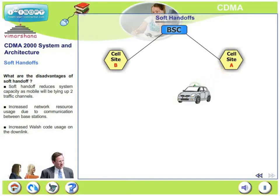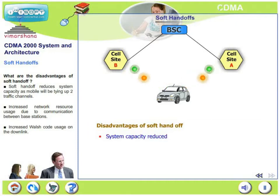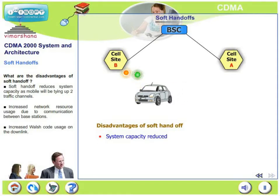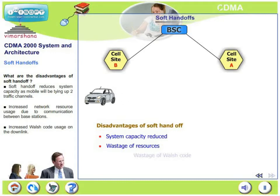Is it advantages all the way? No. There are quite a few disadvantages of soft handoff. Soft handoff reduces system capacity as a mobile will be tying up two or three traffic channels at a time while doing soft handoff. The next disadvantage is increased network resource usage due to communication between several base stations — network resources are unnecessarily used by these duplications. And there is increased Walsh code usage on the downlink, since one mobile is in conversation with multiple base stations.